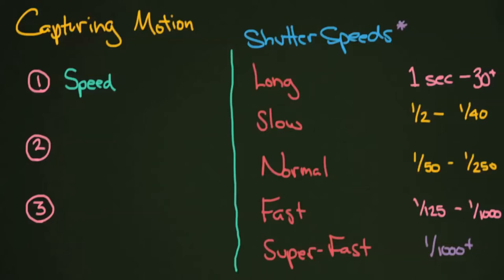A really quickly moving car might blur even with a very fast shutter speed, whereas a person who is walking might blur with just a slow shutter speed. Consider which shutter speed is best suited for what you're shooting — you can look that up or check our shutter speed lesson. The second consideration is distance, which is really about the size of your object in the image. The smaller the object appears in the frame, the slower your shutter speed needs to be to capture its motion, because it's not moving much across your sensor's pixels.